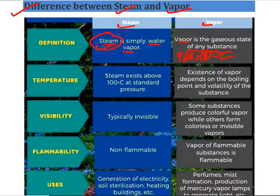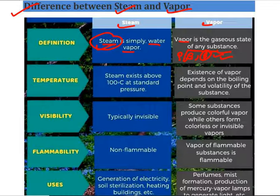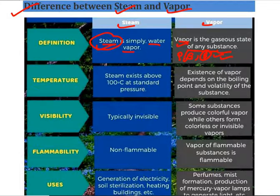If we relate steam to vapor, the steam of water can also be called water vapor — no problem. But the difference is that vapor can include much more, like petroleum products. The gaseous state of petrol, for example, is called petrol vapor. If petrol in its liquefied form comes into gaseous form, that is called petrol vapor.